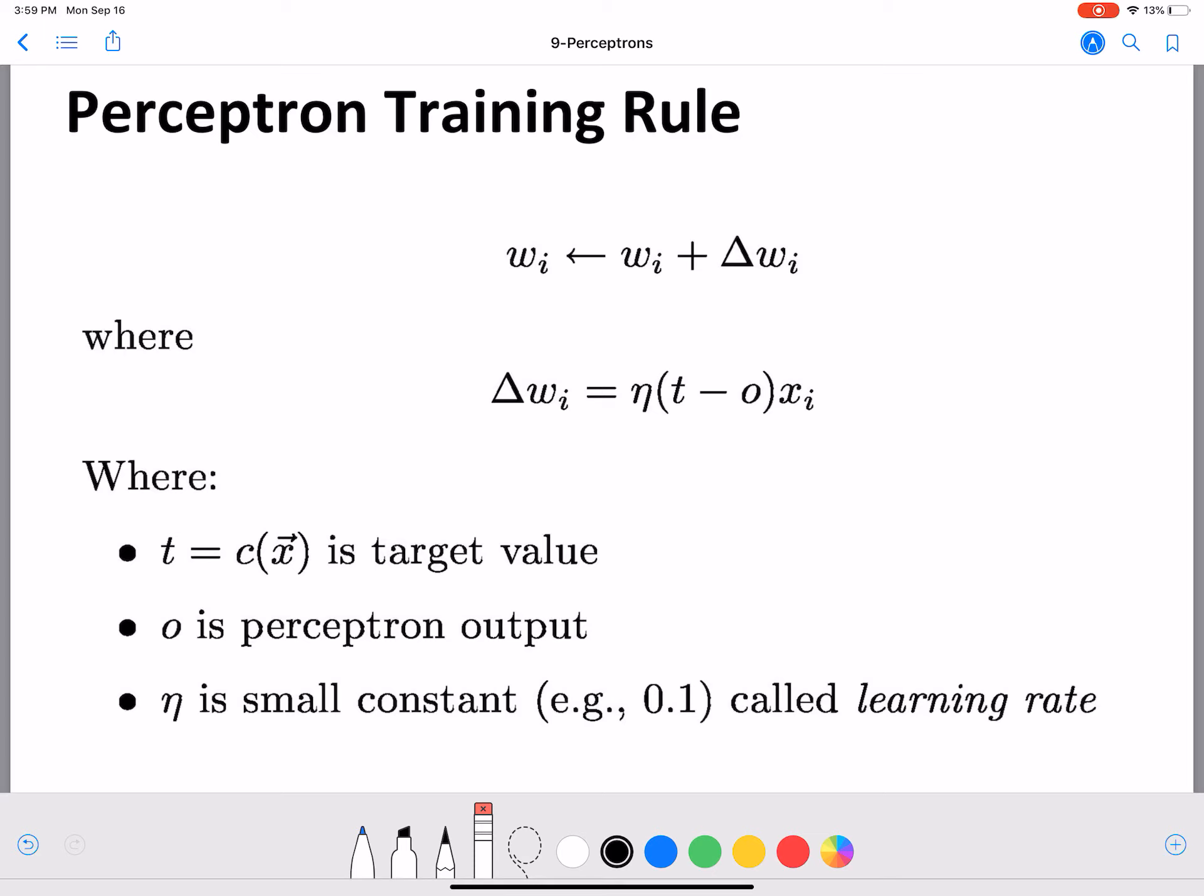we'll continue this discussion by looking at the gradient descent version that is used for perceptrons. We already saw gradient descent in the context of logistic regression. We're going to see gradient descent in the context of perceptrons next.